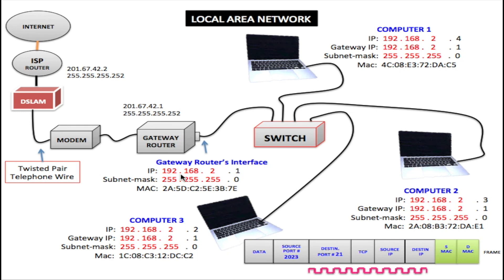For instance, the router has 192.168.2.1 assigned to it. 192.168.2.2 is assigned to computer number three, 2.3 to computer number two, and 2.4 to computer number one. We could assign up to 254 computers on this network, starting with dot one right up to dot 254. The octet actually goes up to 255, but the very last octet, dot 255, is used for broadcast.